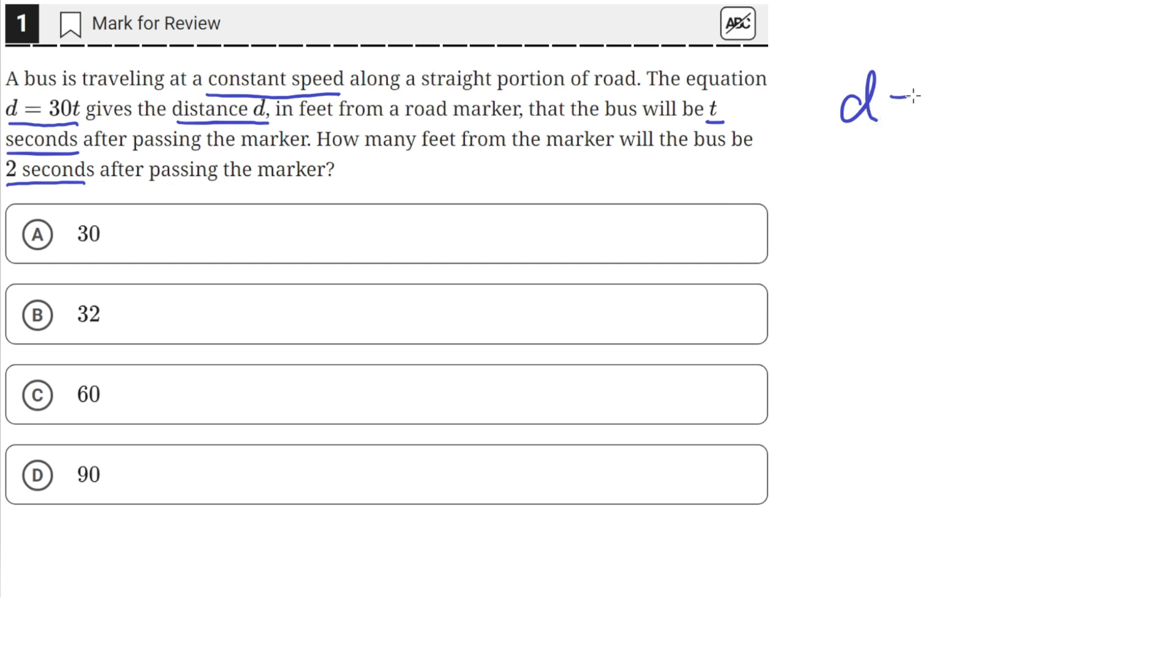So we have this equation d equals 30t that gives us the distance as a function of the time. And we need to find out how many feet the bus will travel after 2 seconds when it passes the marker.